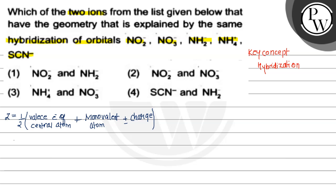We calculate the hybridization of the following species. First option is NO₂⁻: equals half the number of valence electrons — that is 5 for the central atom nitrogen. Oxygen is a divalent atom, so there is no monovalent atom. We add minus charge, that is plus 1. So, ½ × 6 = 3. The hybridization of NO₂⁻ is SP2.